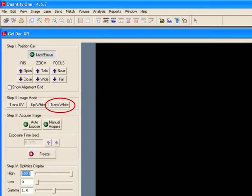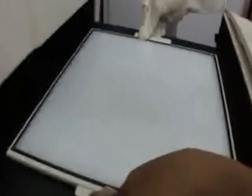Trans white light is used for the documentation of protein gel as the bromophenol blue does not require UV light for fluorescence. A white plate is placed on the stage before placing the protein gel for documentation.